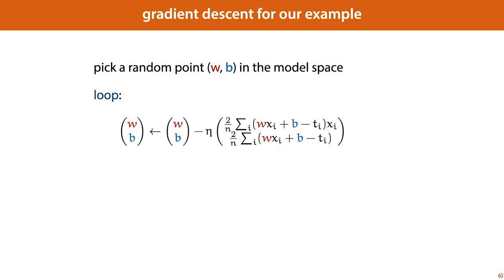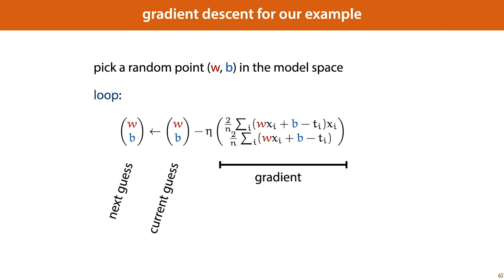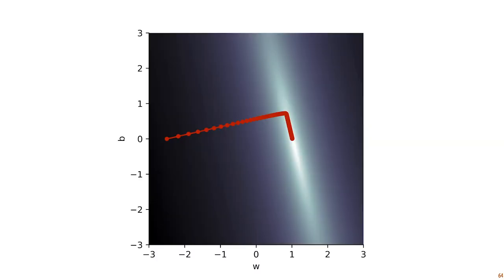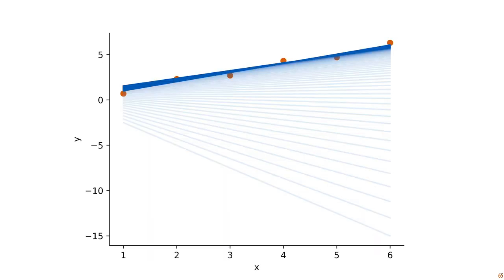Starting with a random point w and b in the model space, we enter a loop, work out these two partial derivatives for our current best guess, multiply that vector by eta, subtract it from our current best guess, and that becomes our new current best guess — that vector is our gradient. And if we plot the trajectory of gradient descent in our model space, we see that it looks like a very smooth path towards the minimum. In our feature space, it looks like this.